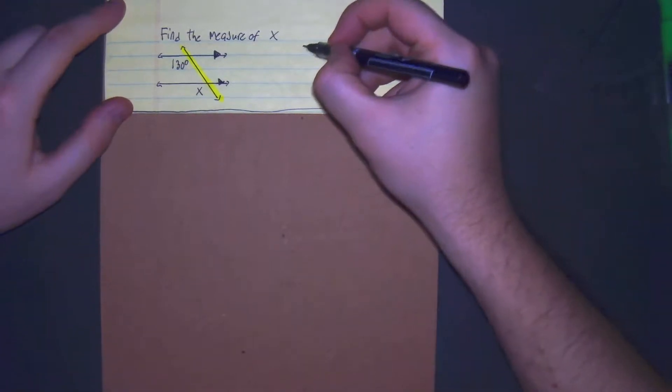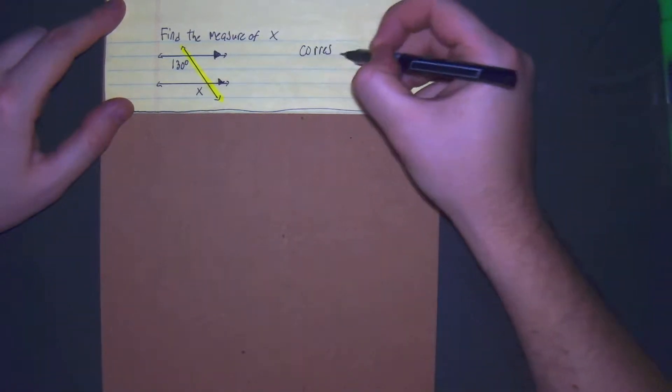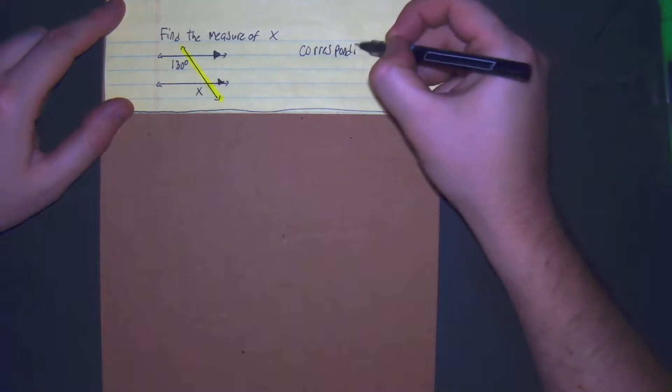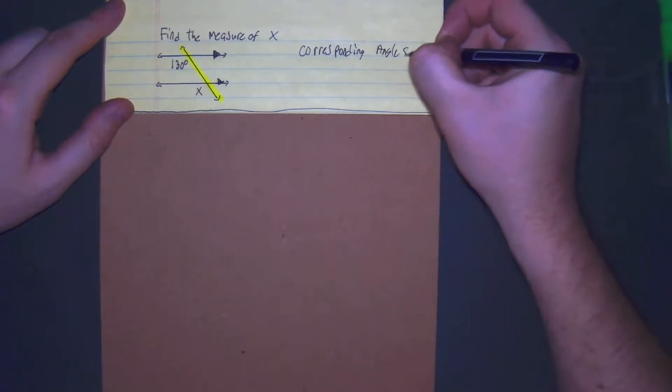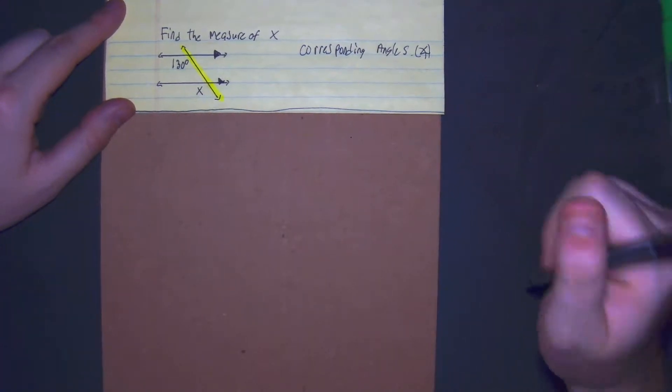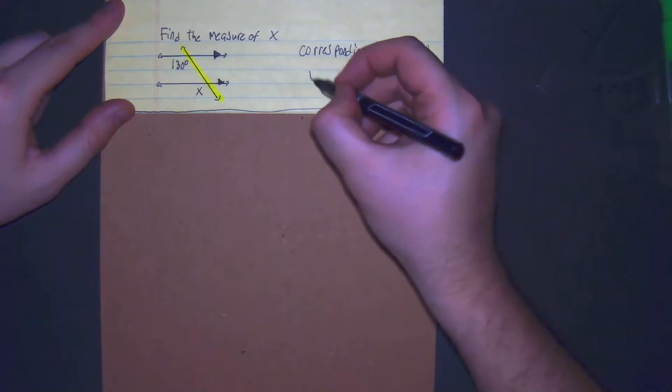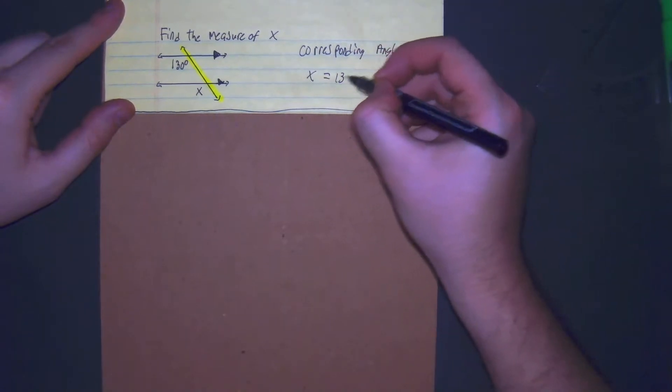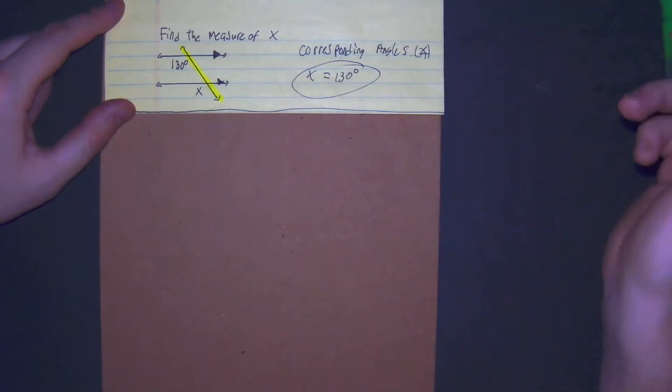We're given 130 degrees and X. 130 and X are on the same side of the transversal, and by the visual representation they're also looking like they have the same positioning. So what we have here is corresponding angles, which means X would have to equal 130 degrees. There you have it.